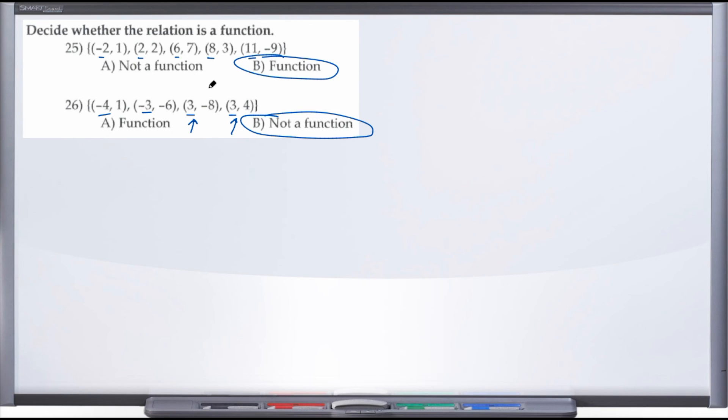So if we're getting two different outputs, two different y's for the same x, we know that that particular set of ordered pairs is not a function - that relation is not a function.